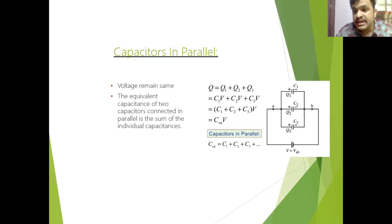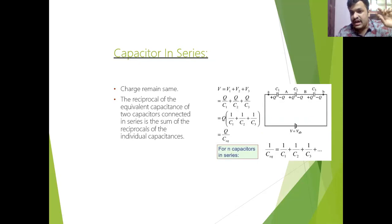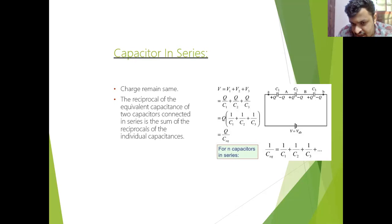Similar to how we studied resistance in series and parallel, we can also place capacitors in series and parallel. In series — it is opposite to that of resistor in series. When we place resistors in series, total resistance R equivalent is R1 plus R2. For capacitors in series it is opposite: 1 by C equivalent equals 1 by C1 plus 1 by C2, and so on.